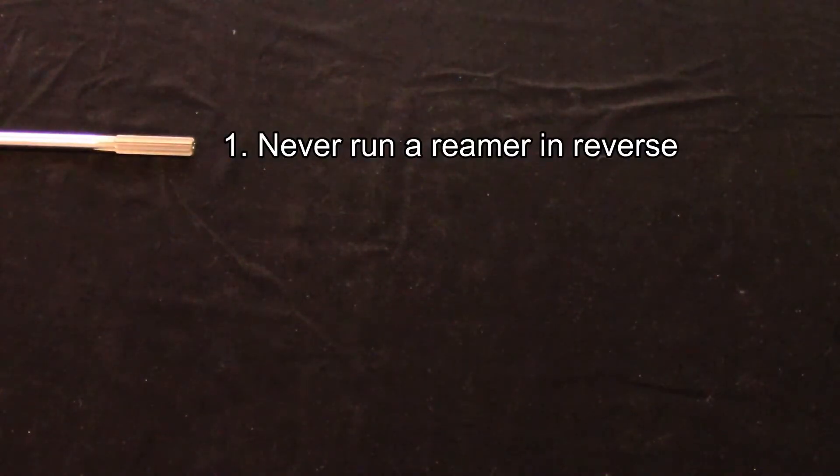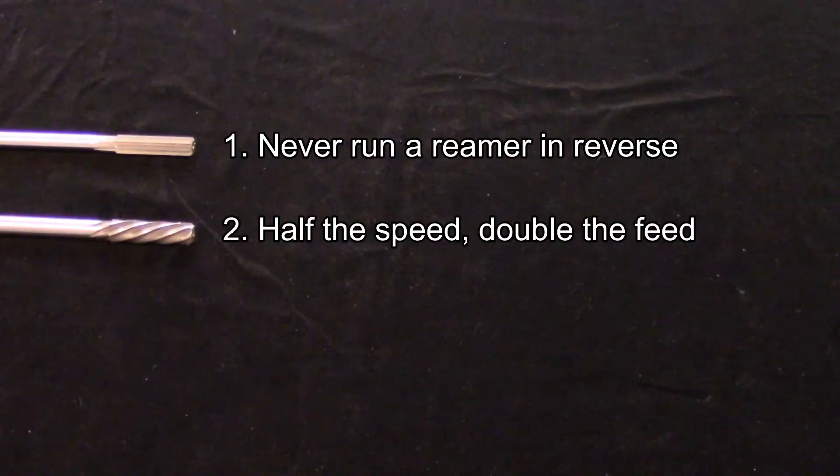There are some rules of thumb that should be followed when reaming. The most important one is that reamers should never be run backwards, either under power or by hand. Doing so dulls the reamer. The next thing you need to know is that reamers should be run at half the speed and double the feed of a similarly sized drill. Simply put, if a drill of the same size should be run at 1400 RPM, the reamer should be run at 700. Likewise, your feed rate would be doubled, although on manual machines that comes down to a sense of feel.